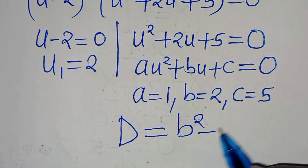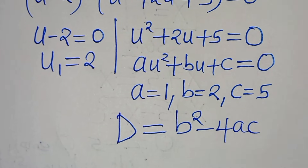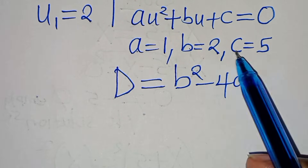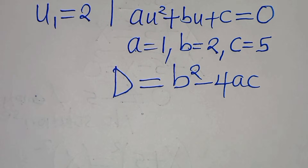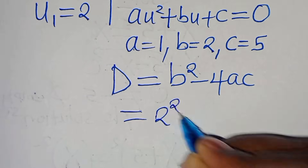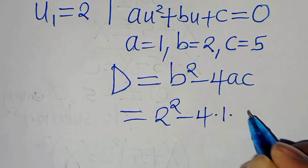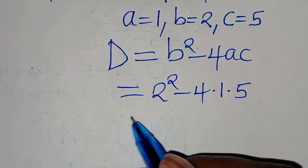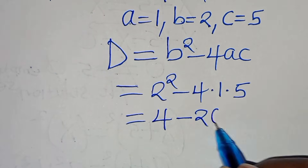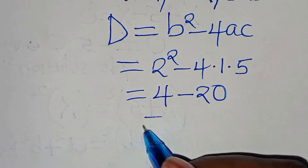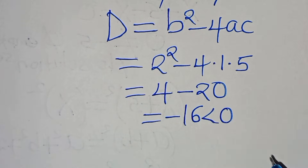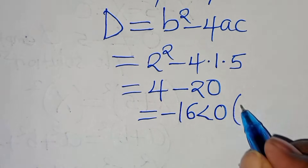Substituting the values of a, b, and c, we have 2 squared minus 4 times 1 times 5. This gives 4 minus 20, which equals minus 16.